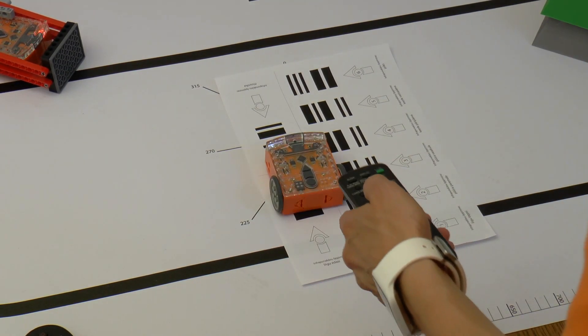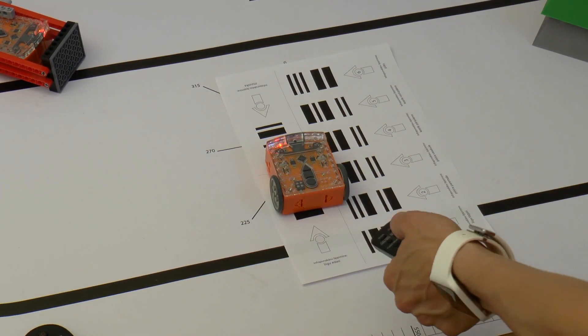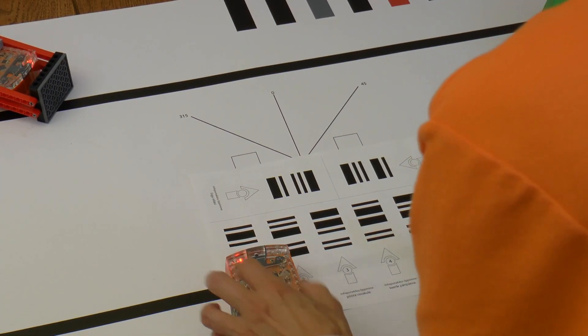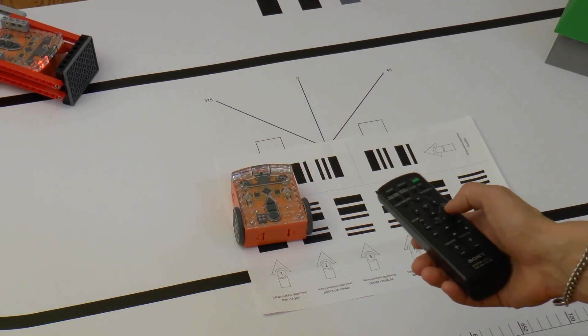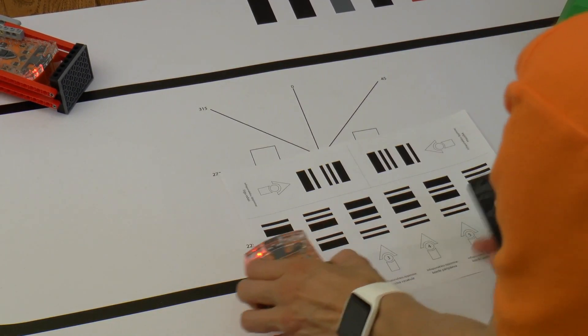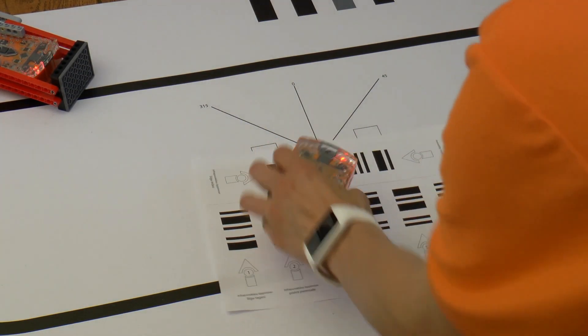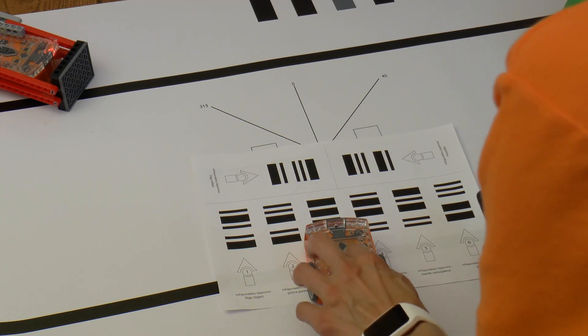I will drive over the code drive forward and press the remote button arrow up. Now I will drive over the code drive backward and press the button arrow down on my remote. I'll drive over the code go right and press the button arrow right. I'll drive over the code drive left and press the remote button arrow left.